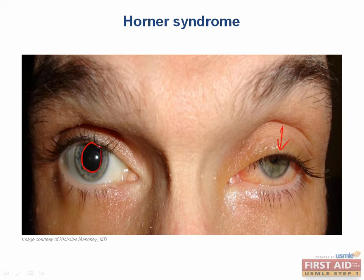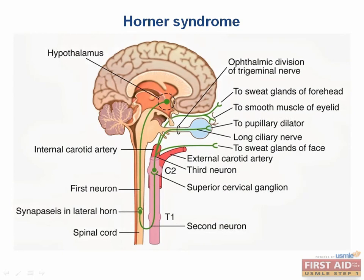To understand all the causes of Horner syndrome, you have to understand the anatomy of the sympathetic tract, which is one reason why this shows up so often on the boards. The first neuron of the sympathetic pathway originates in the autonomic regulatory nuclei in the hypothalamus. The tract descends to T1 and T2 in the intermediolateral cell column. The preganglionic neurons exit at T1 and T2 and then ascend up the paravertebral sympathetic chain to the superior cervical ganglion. The third neuron then travels with the carotid plexus along the internal carotid artery to reach the facial muscles.